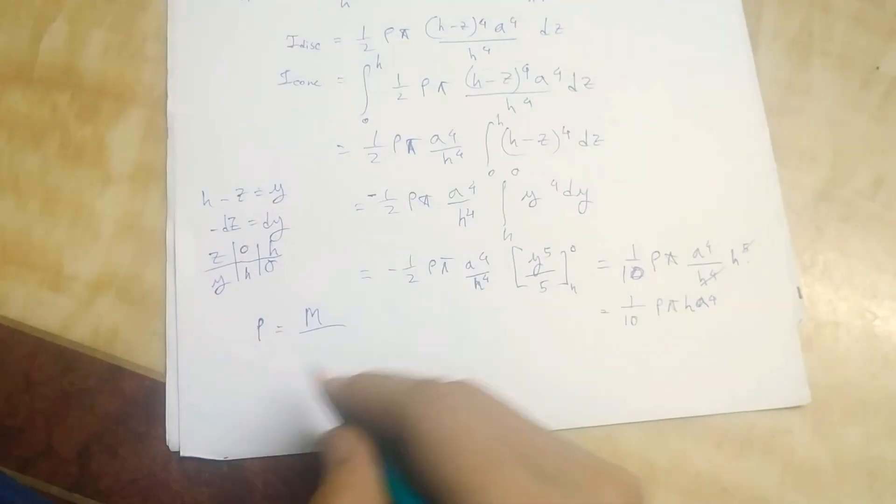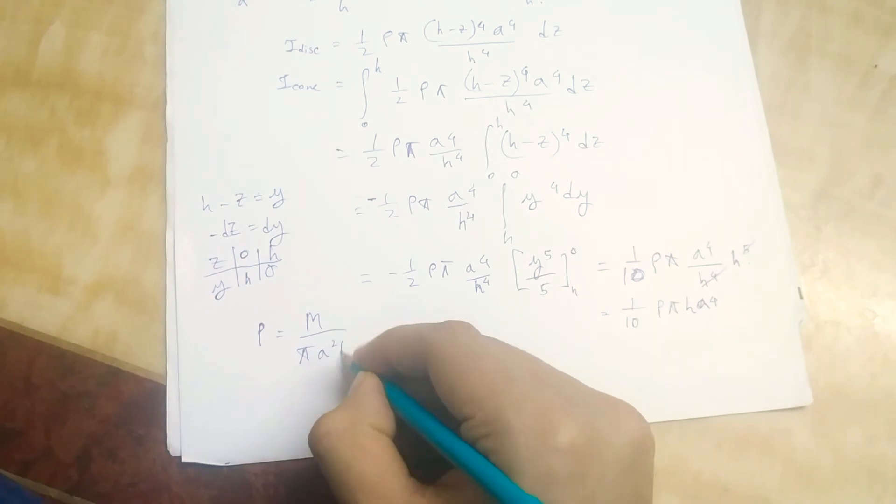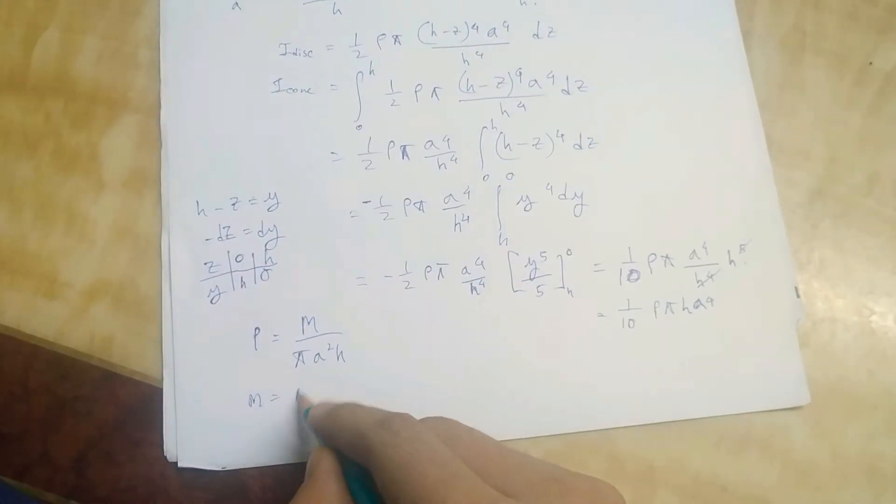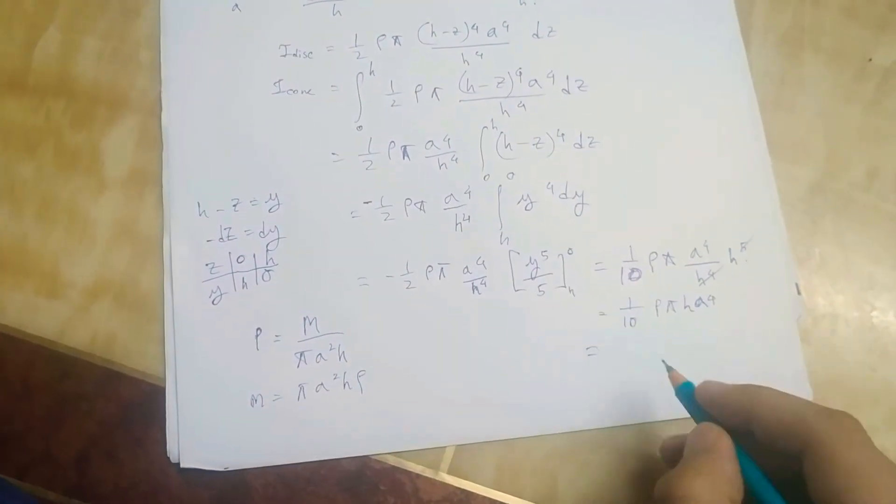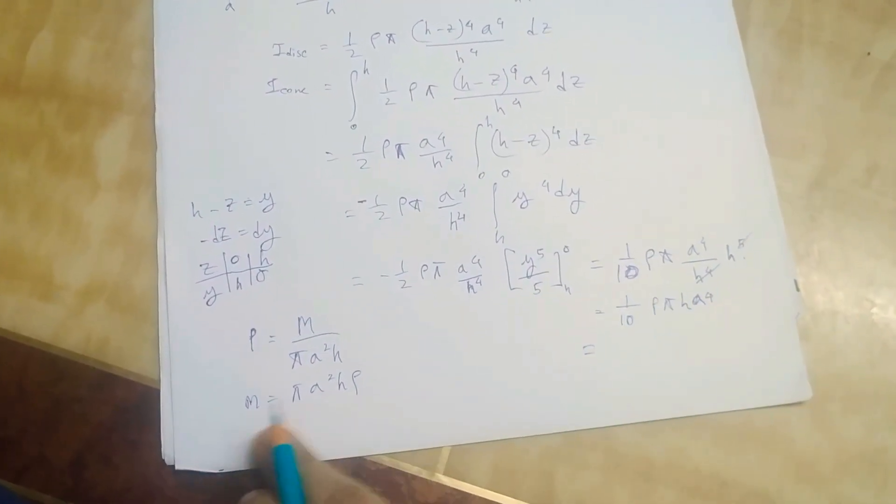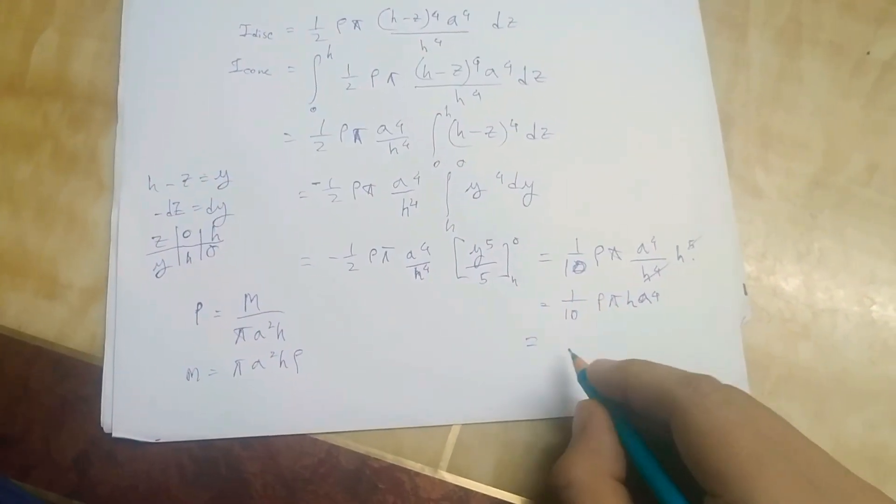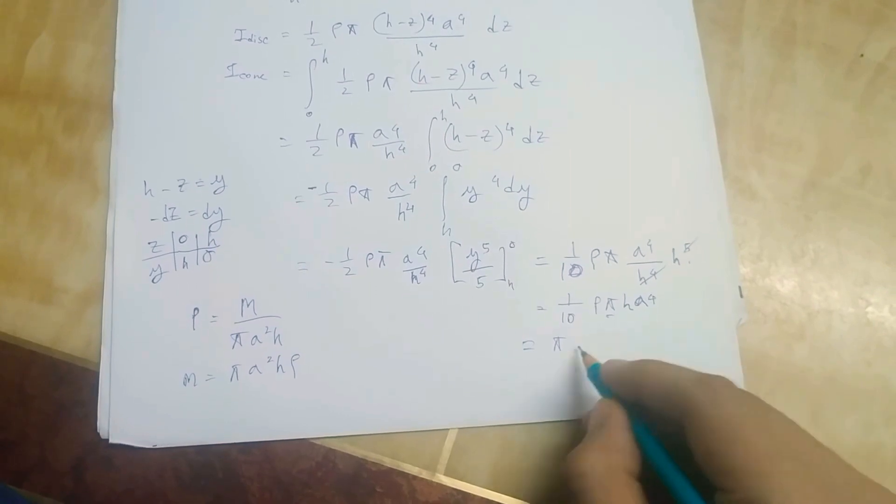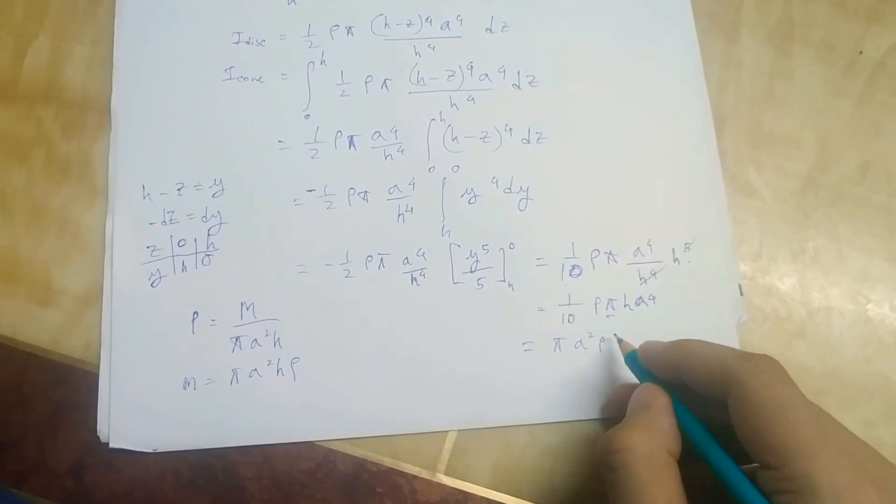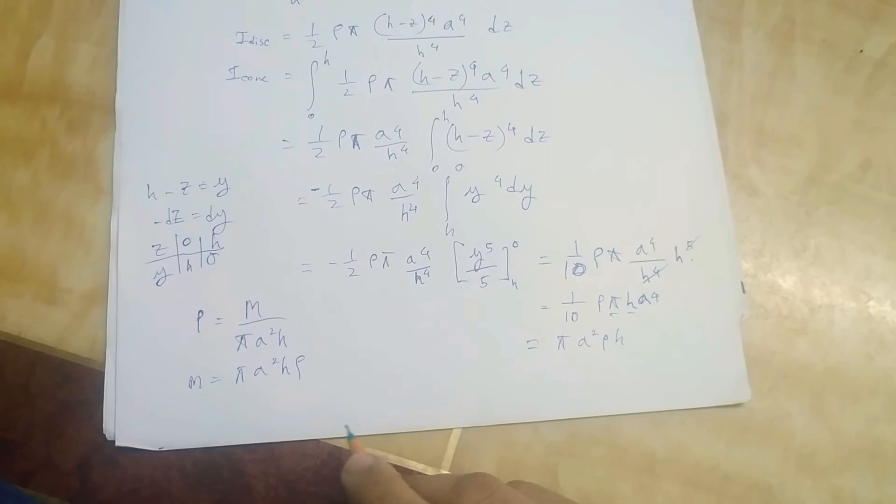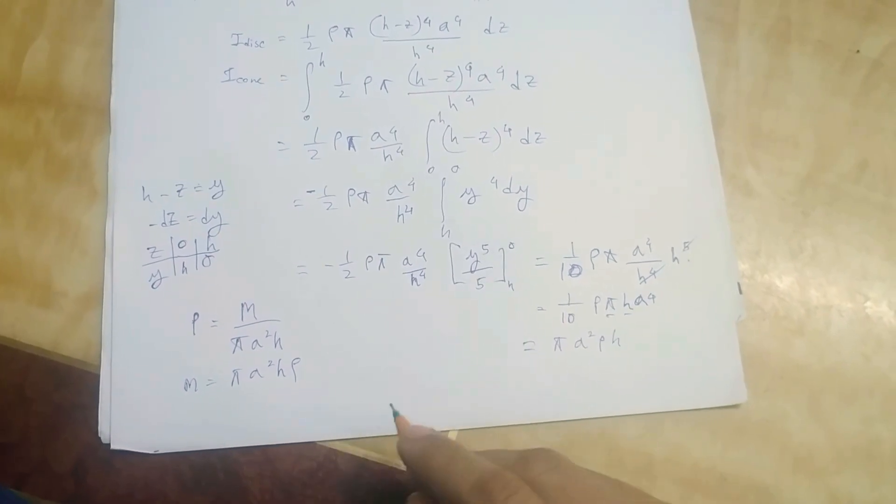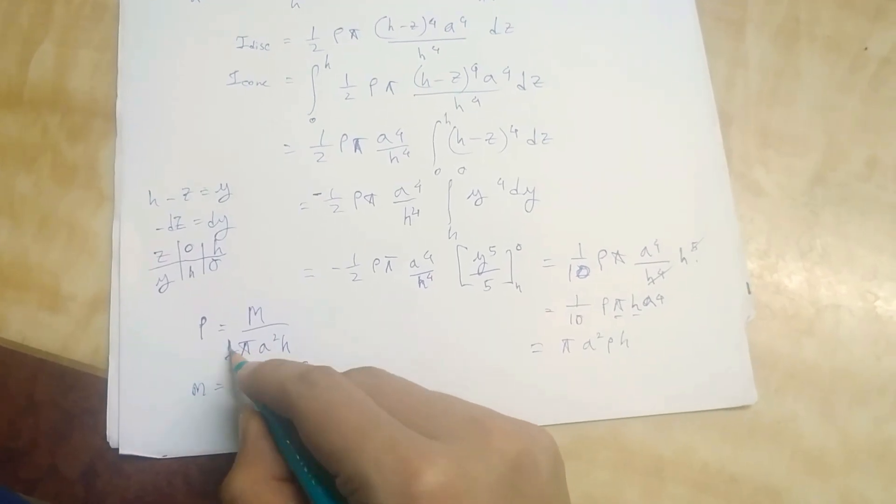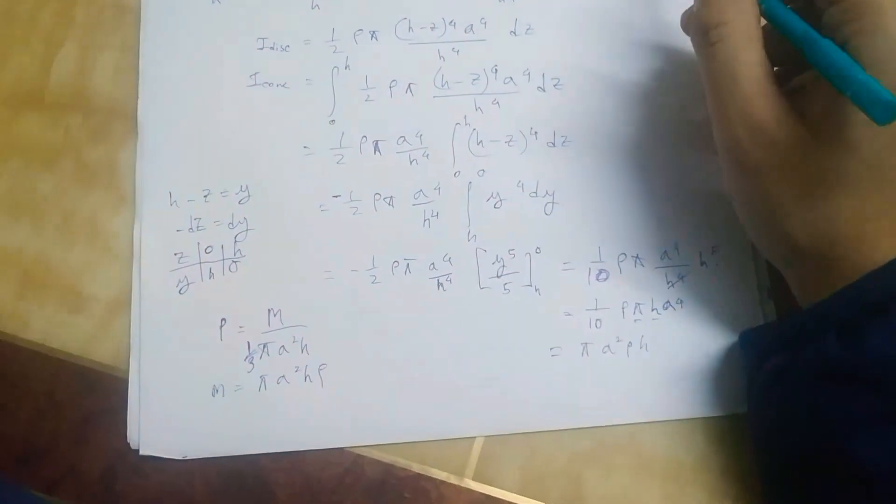The total volume will be pi a squared h as we know. So m will be equal to pi a squared h rho. Now let us check that expression in here. We can, we have pi, we have a squared, we have rho here, we have h.